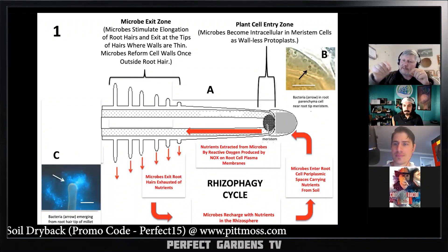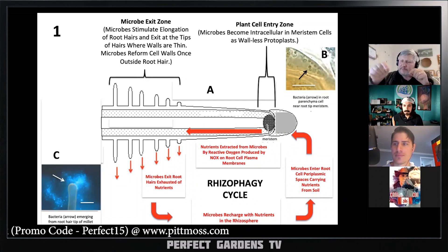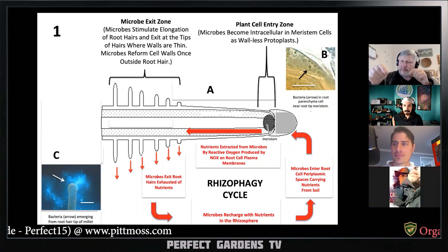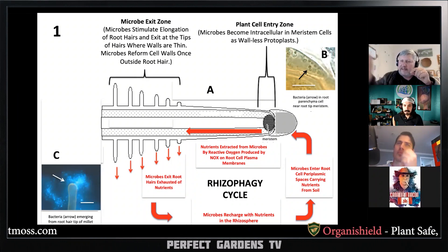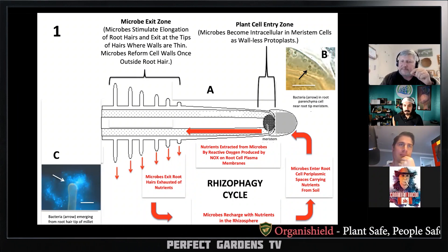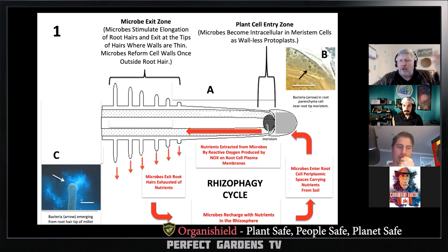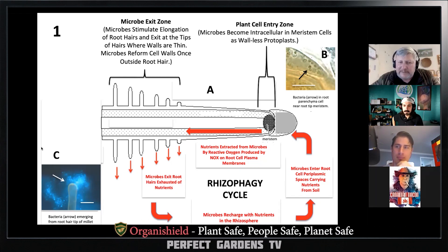And every time there's a growth spurt, it's because the microbes are producing ethylene. So if we remove all these microbes, you have no root hair formation.